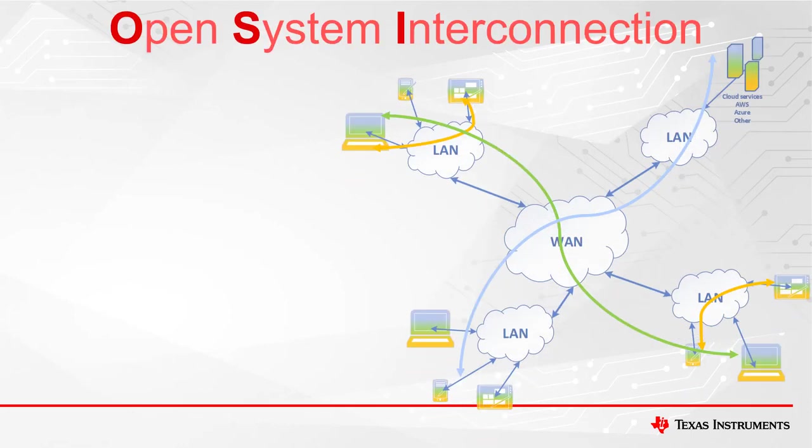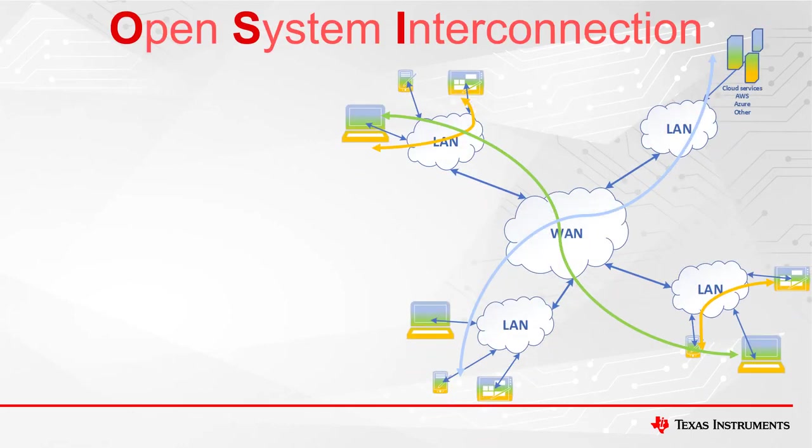Since the fundamental goal of adding Wi-Fi to a system is enabling connectivity and communication, we will use the OSI model to illustrate the correlation between the networking layers and the different architecture schemes. OSI stands for Open System Interconnection, which is mainly a conceptual framework used to describe the functions of a networking system.